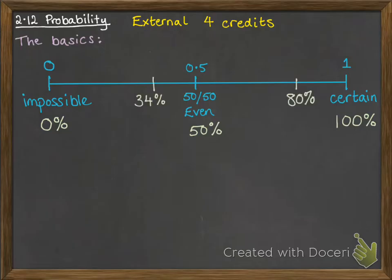And we might have other ones like 80% or 34%. We might want to express them as fractions. So our 50% would be a half.